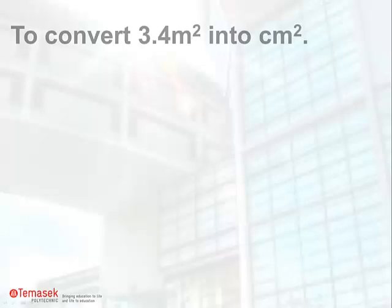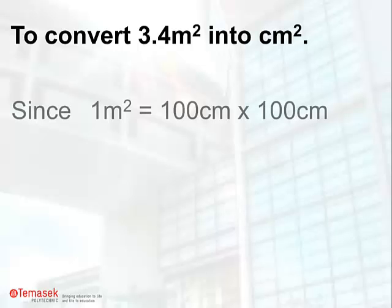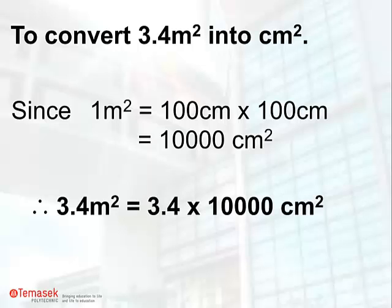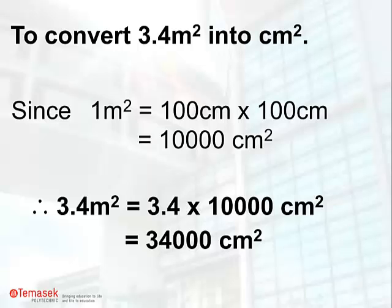Let us take a look at an example. To convert 3.4 square meters to square centimeters, we can first write down one square meter equals 10,000 square centimeters. 3.4 square meters is thus 3.4 multiplied by 10,000 square centimeters, which is simply 34,000 square centimeters.